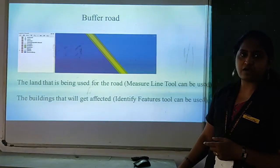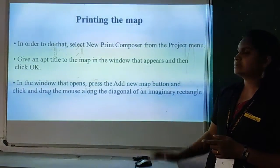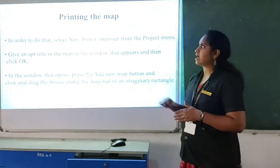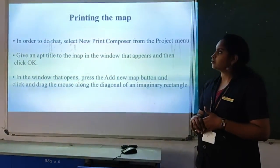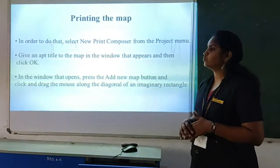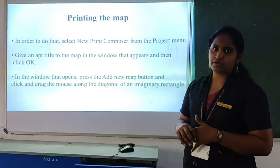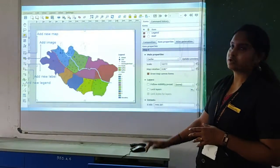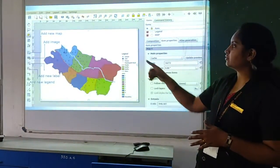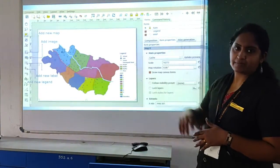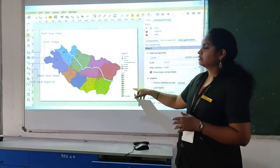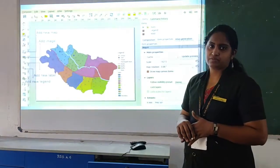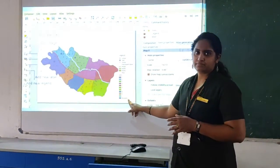These steps also you have to write in your practical note. After changing your active layer, you can include the content which you have to print or save. For that, you have the option 'New Print Composer.' In that, you have to select the map and choose 'New Print Composer,' and you will get a new window where you can use 'Add Image' or 'Add New Map.' Just drag that onto the canvas and the map will be displayed.